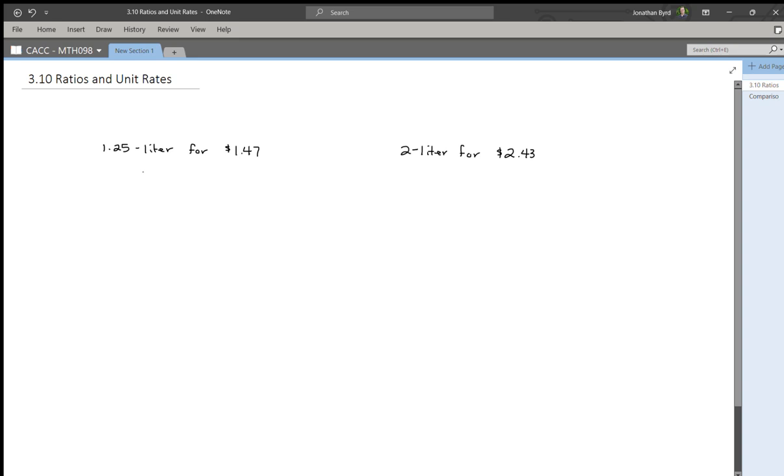So the ratio or the rate is 1.47 over 1.25. Now that's dollars and liters. And then over here on the 2 liter, it's $2.43 per 2 liters.